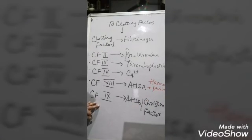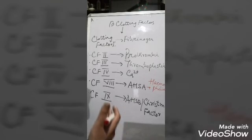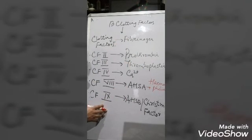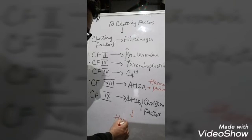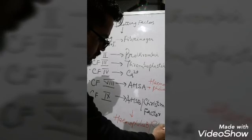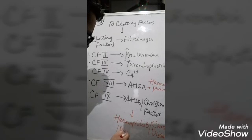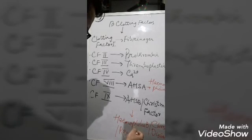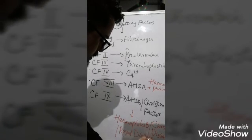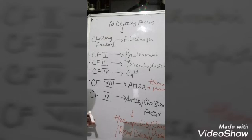Sometimes there is deficiency of clotting factor 9. This disease is also known as the royal disease because it is seen in the lineage of the royal family of Britain. There are two bleeding diseases: hemophilia A due to deficiency of clotting factor 8, and hemophilia B due to deficiency of clotting factor 9.